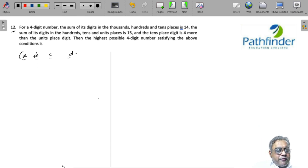So these are four digits of the number and we are told that sum of its thousands, hundreds and tens digit is 14. Then you are also given that sum of its digits in hundreds, tens and units place, this sum is 15.